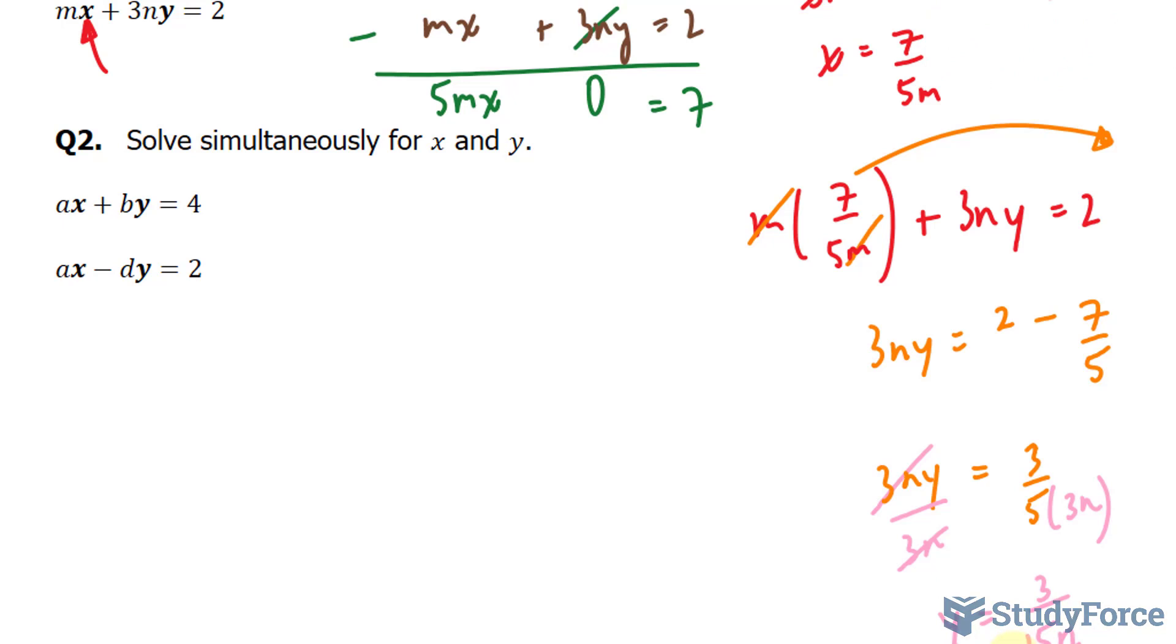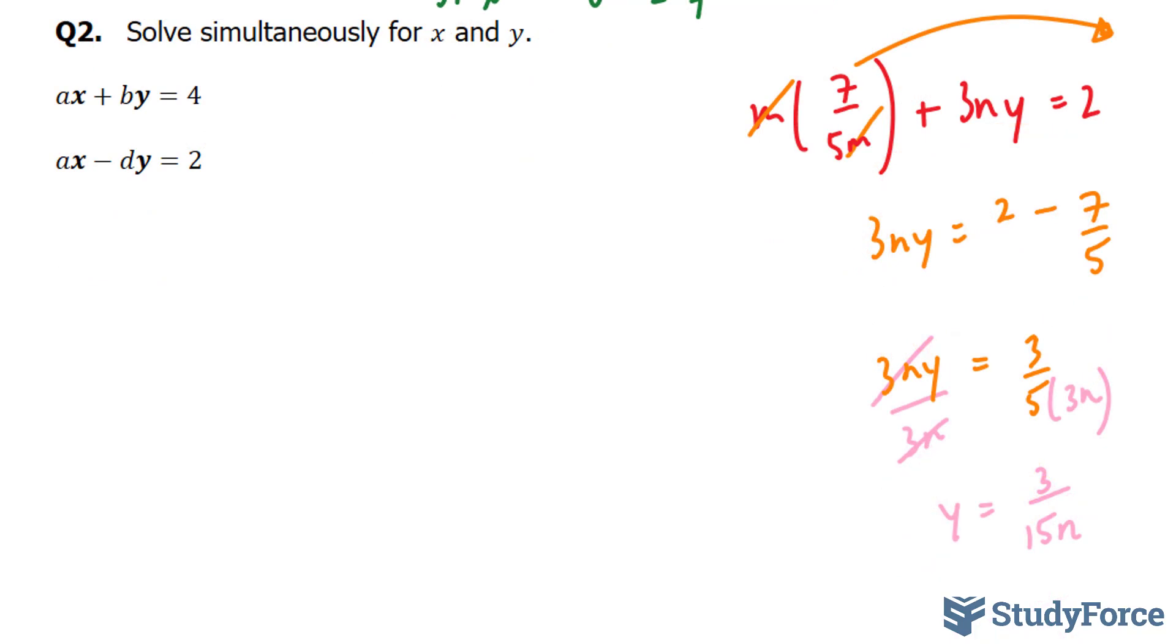In question number 2, they ask us for the same thing. They want us to solve simultaneously for x and y. This one is easier than the previous one because I can right away subtract the two equations. Now if I subtract the two equations, ax minus ax is equal to 0. What about these two terms? By minus negative dy. That gives us by plus dy. And finally, 4 minus 2 is equal to 2.